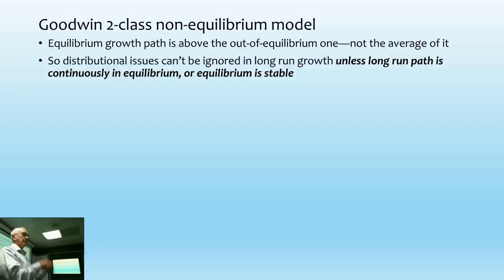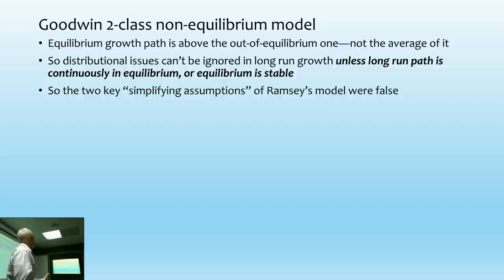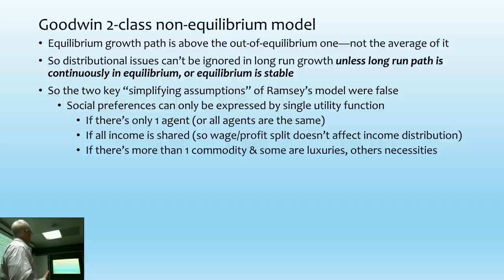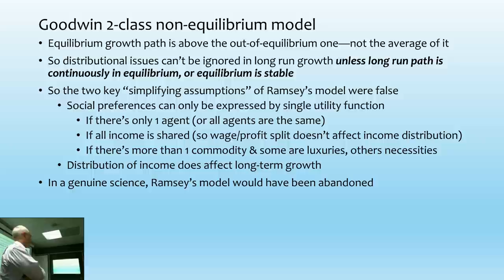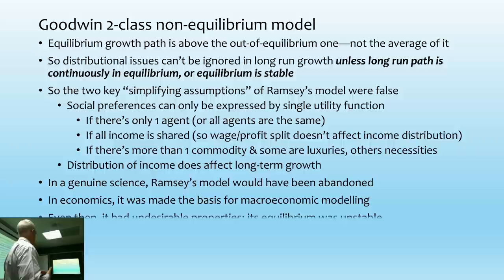So you can't ignore the distributional issues. There are two assumptions that Ramsey made to build the model that were both false: you can't represent an entire society's preferences with a single indifference surface, and you can't ignore distribution when you're looking at long-term growth.